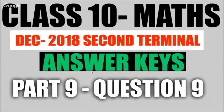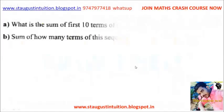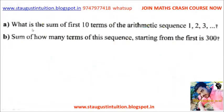What is the sum of the first 10 terms of the arithmetic sequence 1, 2, 3? And how many terms of the sequence starting from the first is 300?